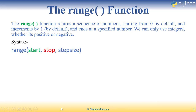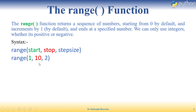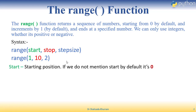Let's see how the syntax works. We write 'range' first, then inside parentheses we give the start value, the stop value, and the step size. So the syntax is: range(start, stop, step).